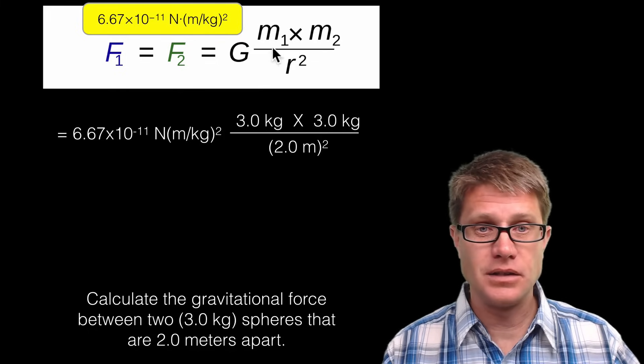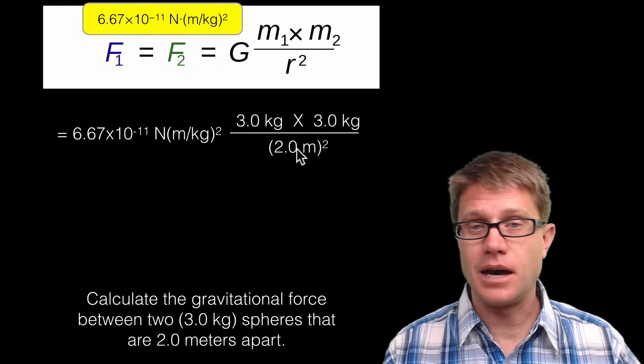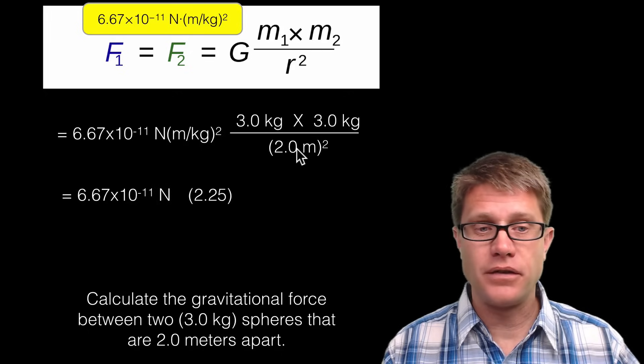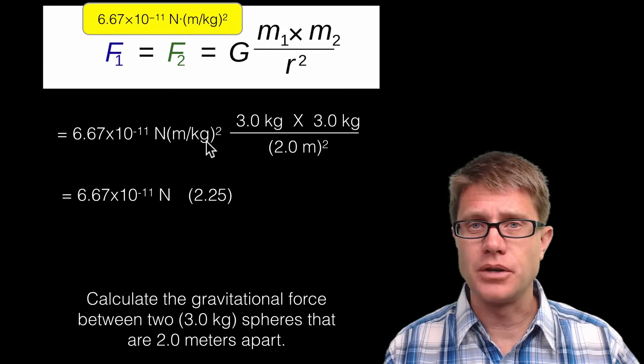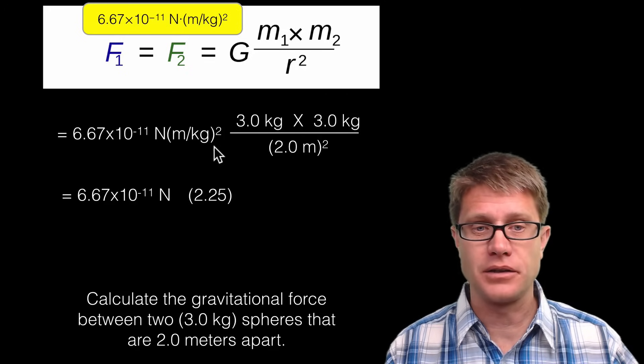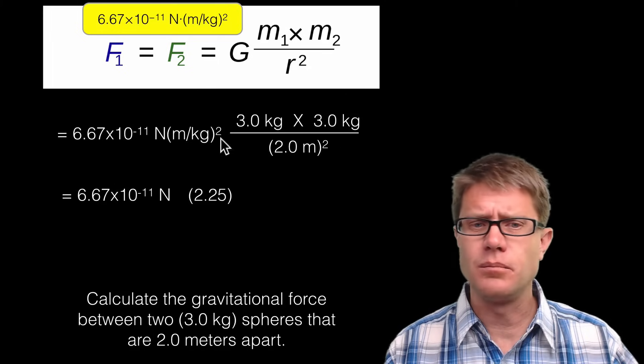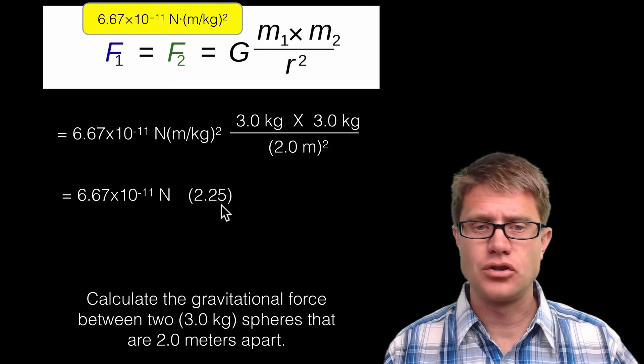I have got my constant G. Then I am going to multiply my two masses on the top. And then divide that by my center-center distance squared. And so if I simplify that a little bit, my constant is here. What happened to these units? Well you can see that I have kilograms squared on the top. Kilogram squared on the bottom here. So those cancel. Meter squared on the bottom. Meter squared on the top. And this is simply 9 divided by 4 which is 2.25.